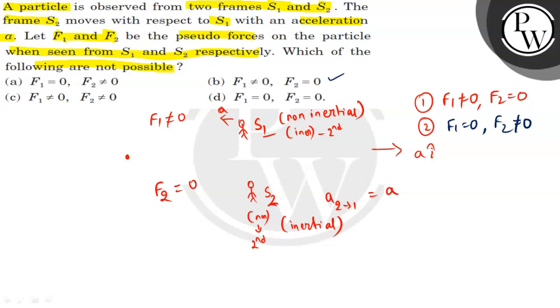In the second case, F1 is not equal to 0 and F2 is not equal to 0. Also, F1 is equal to 0 and F2 is equal to 0 — this is possible. So these two options will not be our answer, because we cannot say they are not possible.